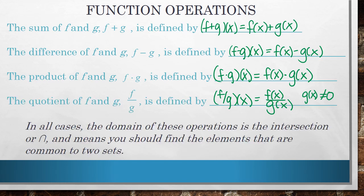In all cases, the domain of these operations is the intersection, and sometimes you're going to see an intersection notated with this little upside down u kind of looking symbol. That's the intersection symbol in math, and it means you should find the elements that are common to two sets.